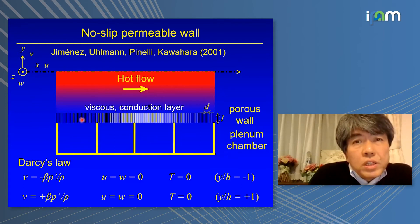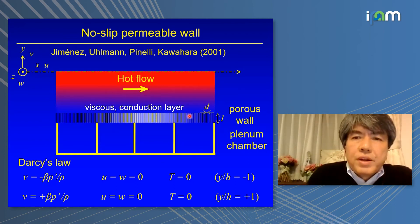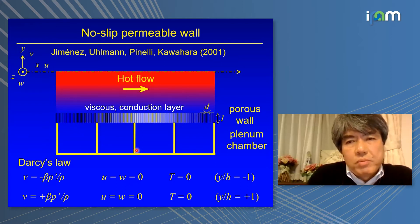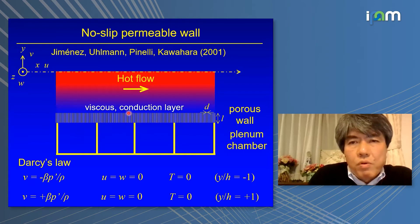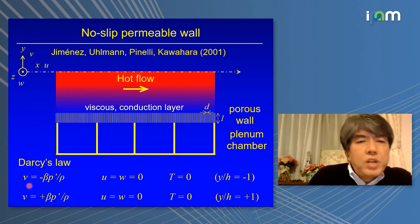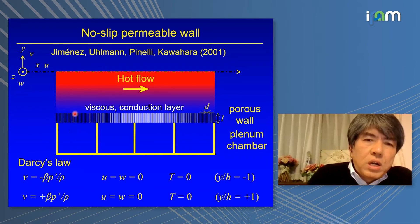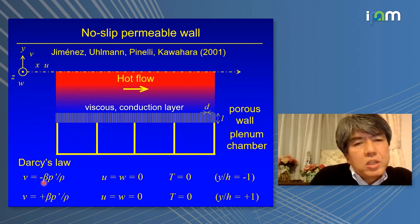We consider the boundary condition of a no-slip permeable wall. The fluid in the channel is internally heated uniformly, and the boundary is a porous wall — a kind of bundle of straws connected to a plenum chamber. If there is a pressure difference between the channel and the chamber, we expect wall-normal velocity across the wall. We suppose the holes of the permeable wall are small enough that the Reynolds number is very small, giving a linear relation between pressure fluctuation and wall-normal velocity. Beta is the permeability parameter.